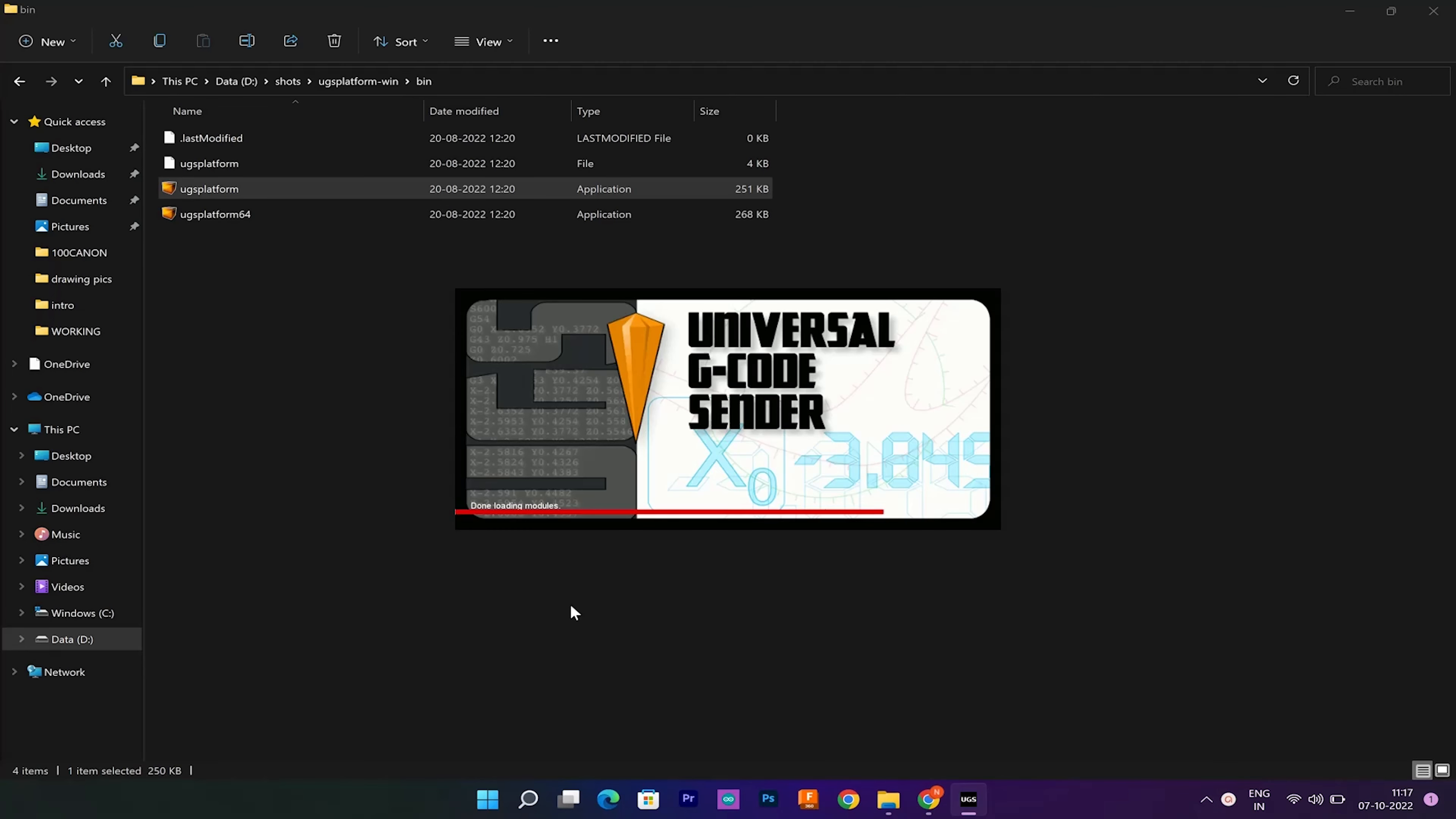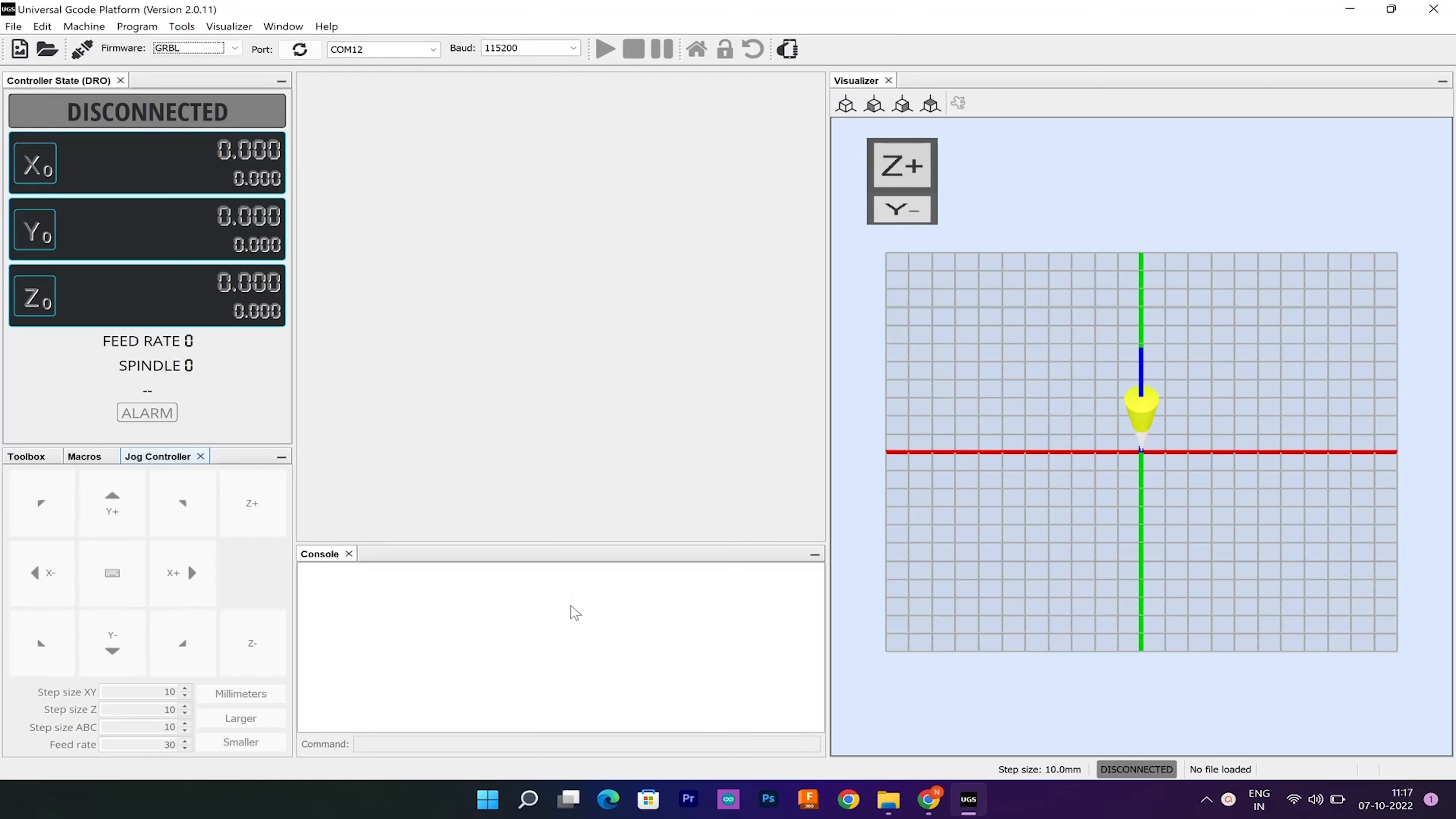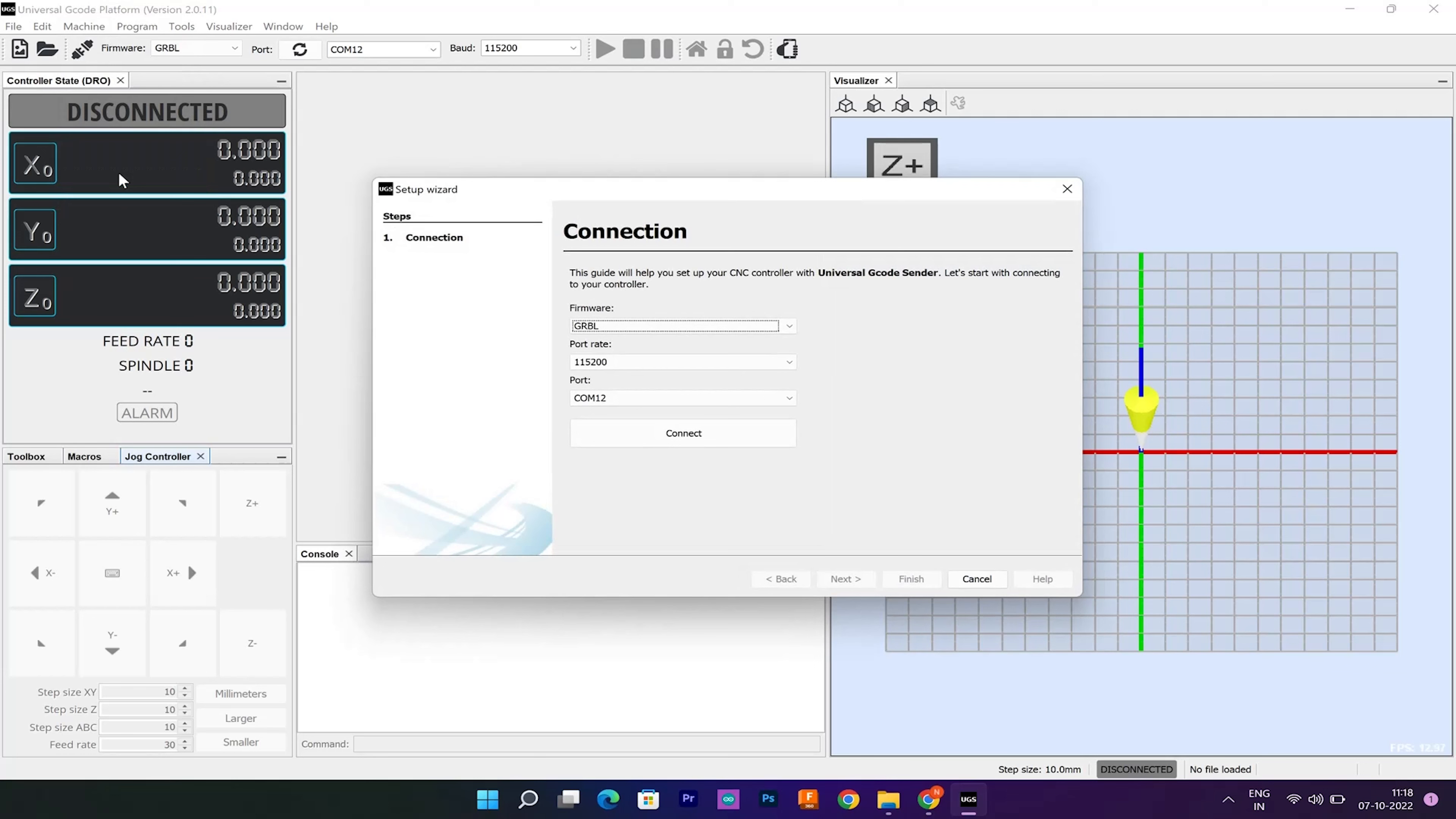However in order to send the G-code to the Arduino, we need some kind of interface. So here we are using Universal G-code Sender to get the job done. After installing the UGS, first we need to control the GRBL parameters. For that purpose, we will use the UGS setup wizard which is much more convenient than manually typing commands through serial monitor of Arduino IDE.